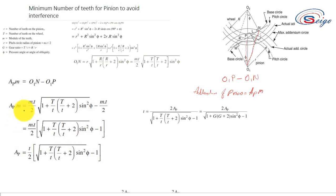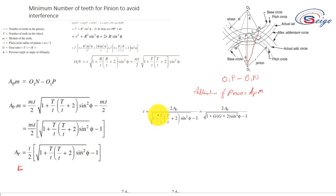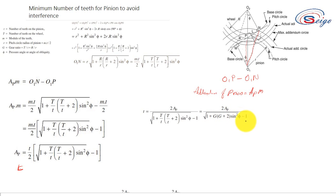Cancelling M on both sides, the addendum fraction AP remains. Solving for the minimum number of teeth small t, we get t equals 2 AP divided by the quantity root of 1 plus capital T over small t times capital T over small t plus 2 sin squared phi, minus 1. This equals 2AP divided by the square root of 1 plus G times G plus 2 times sin squared phi, minus 1, where G is the gear ratio.